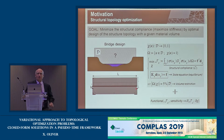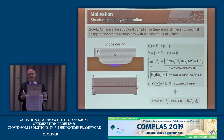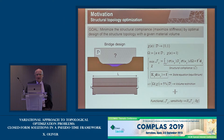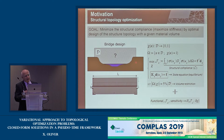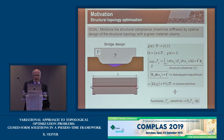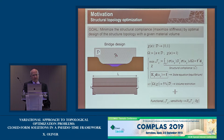What can topology optimization bring, in combination with computational mechanics, to engineering design? This can be exemplified with a classical example. Imagine we are a bridge engineer wanting to design a bridge spanning a river. We define a design domain, specify the loads the bridge must carry and the points where displacements are imposed, and then define where to place a certain amount of material — not all the volume of the domain, but a certain percentage, say 5%.